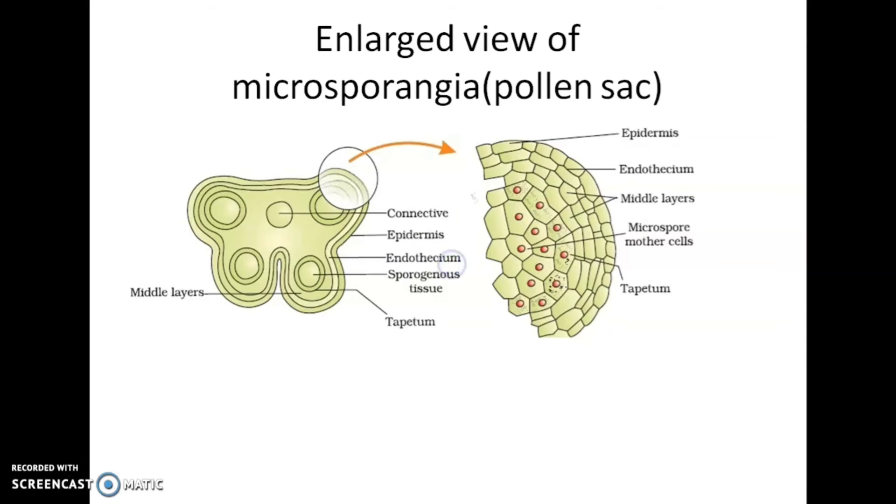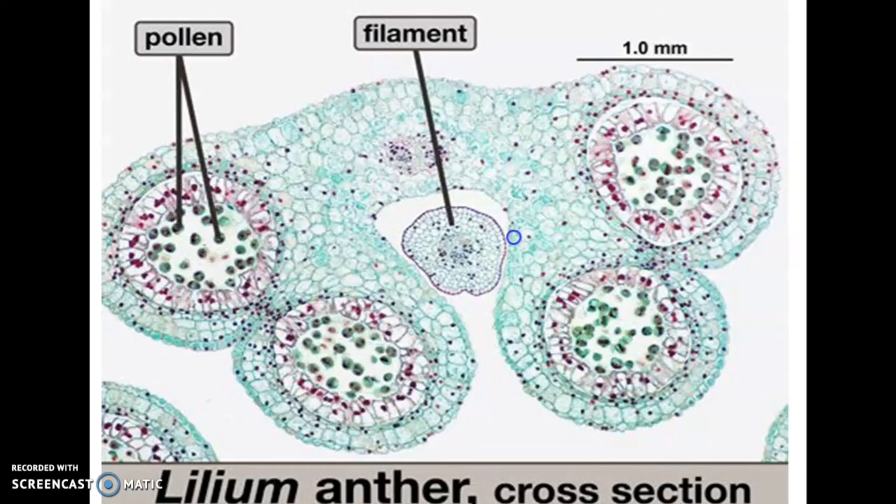Let's discuss the structure again. This is epidermis, endothecium, middle layer, then this is tapetum, and the innermost is microsporangium having sporogenous tissue when young. That's about the structure of microsporangium. Now we are going to study the process, that is microsporogenesis. As the anther develops, the cells of sporogenous tissue undergo meiotic division, meiosis, to form microspore tetrads.